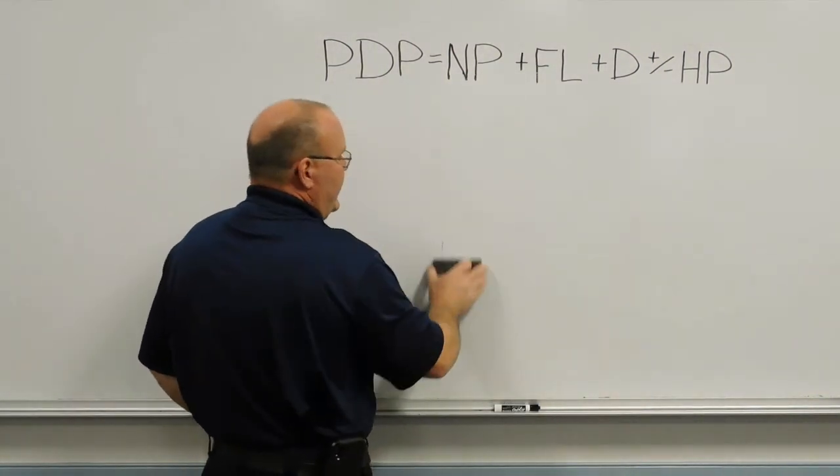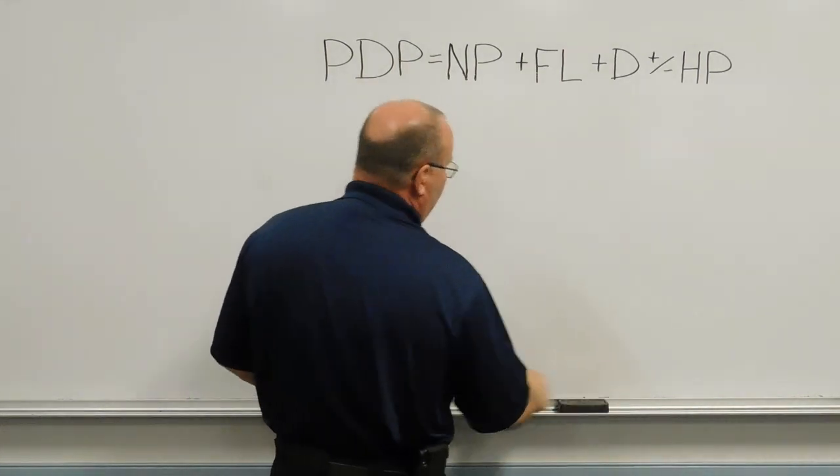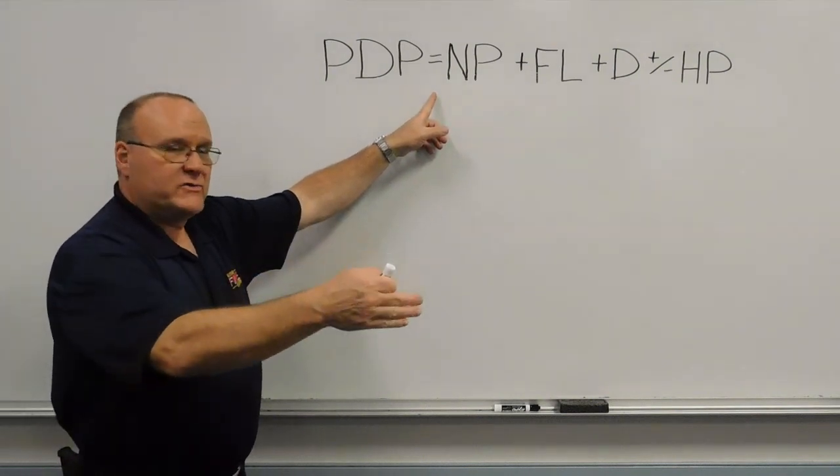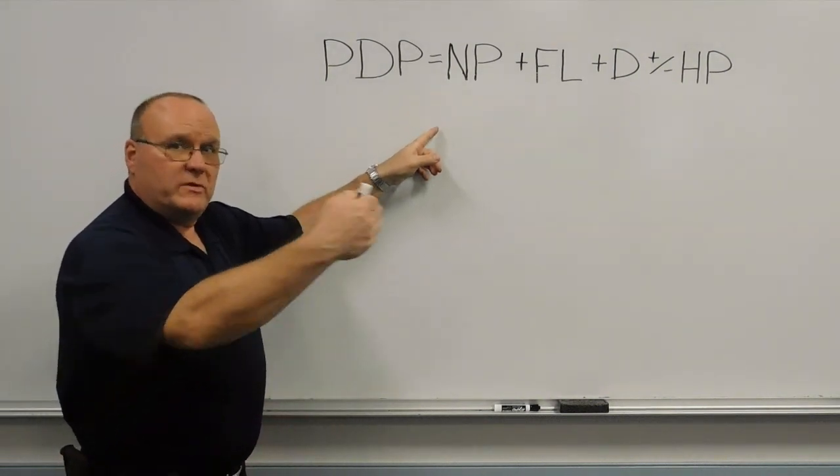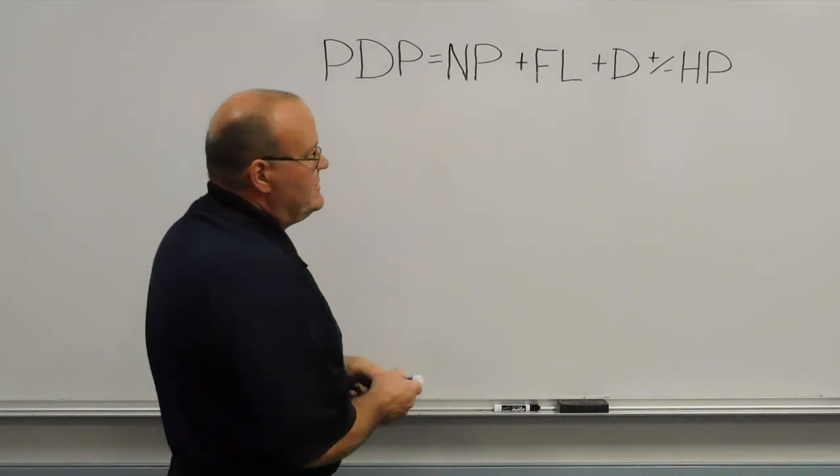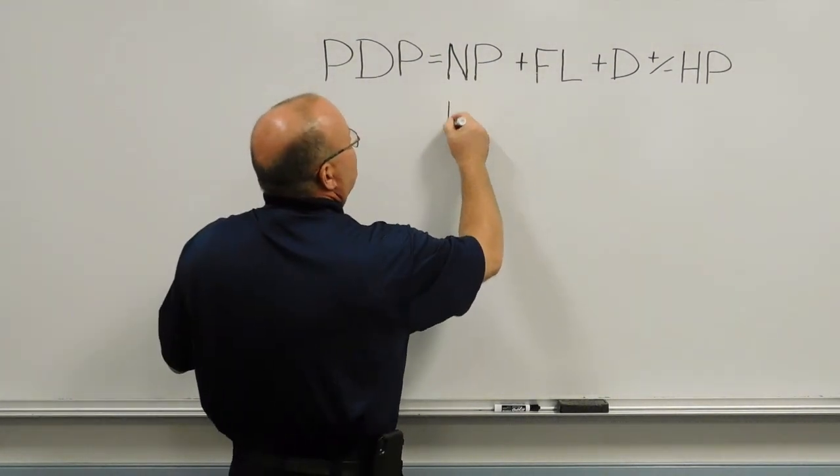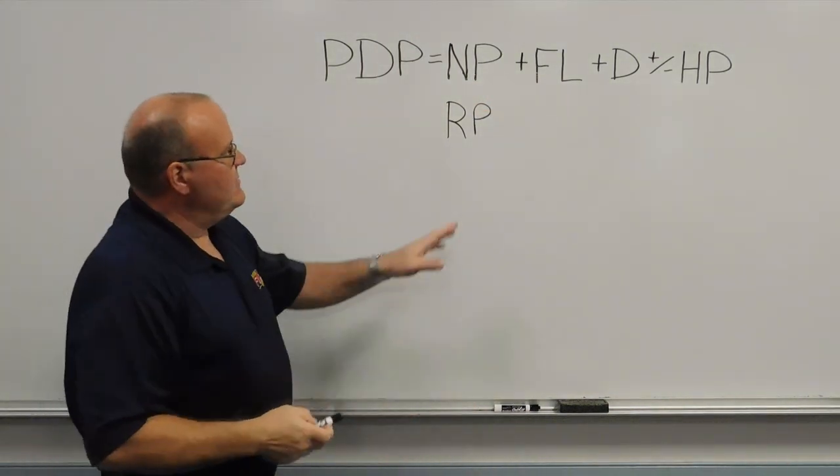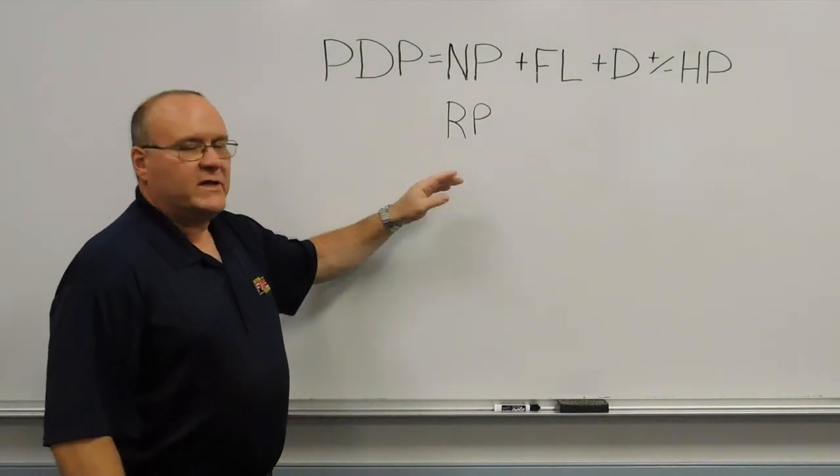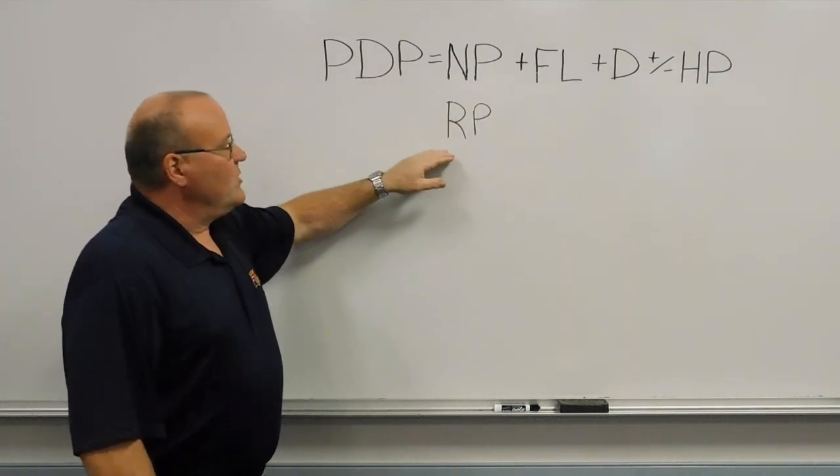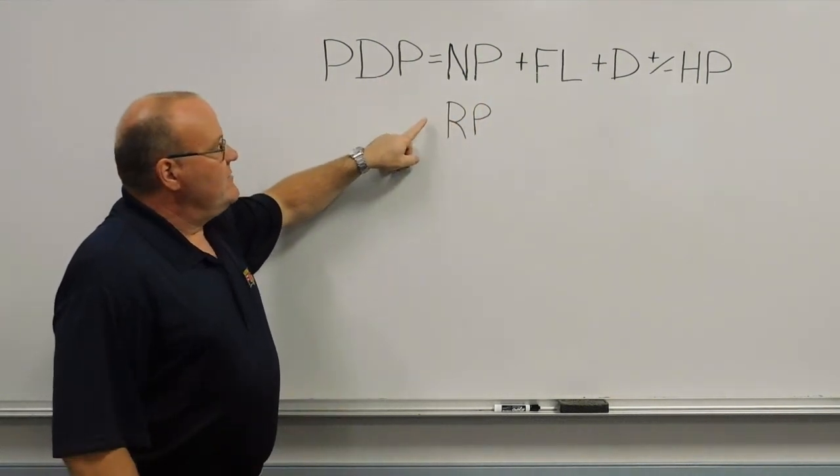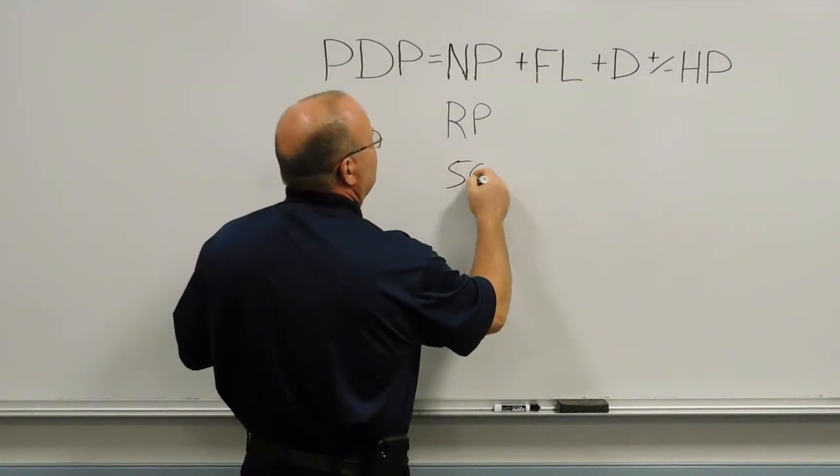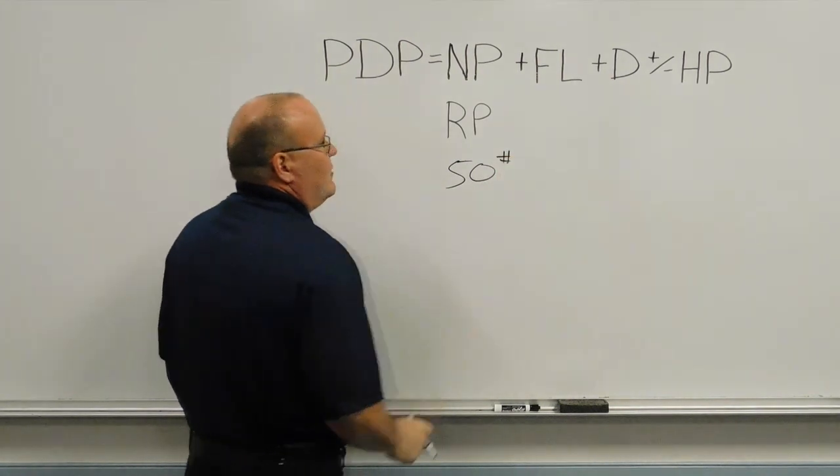If our fire ground assignment changed, and we weren't an attack engine, but instead we were a supply or relay engine, then instead of going from our pump to a nozzle, we would be going from our pump to another pump. In which case the NP would change, and instead of nozzle pressure, we would call it RP, or residual pressure. And in the case of going from pump to pump on the fire ground, I want to give that other driver or operator at the end a little bit of pressure to work with. So I would give them a residual pressure of 50 pounds in a supply or relay operation.